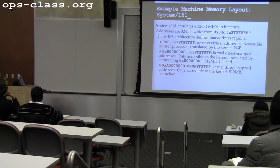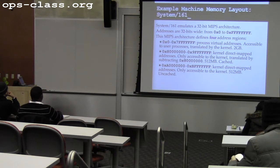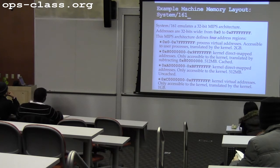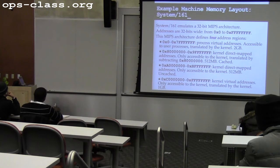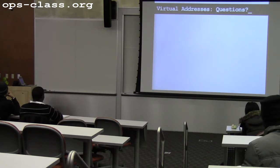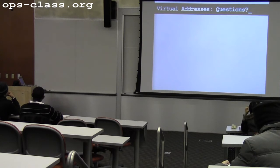There's also a direct-mapped address area where we typically put devices and other things the kernel communicates with that look like memory but don't observe memory caching semantics. And the top 1 gigabyte are kernel virtual addresses — translated in the same way as user addresses but only accessible to the kernel. Any questions about virtual addresses before we talk about how to implement them?